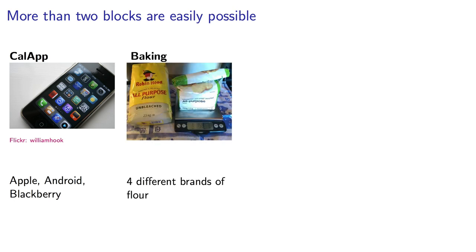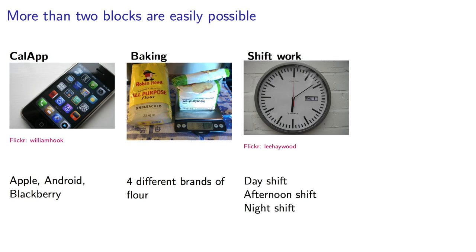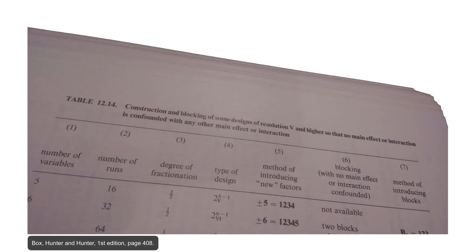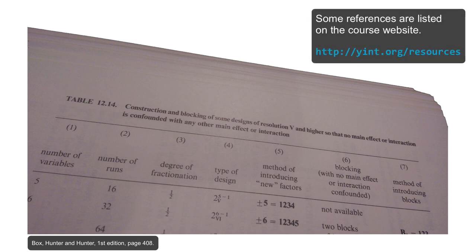In our baking example, if we were using large quantities of flour, we might have had four different flour suppliers. Experiments in a factory might rely on three shifts, a morning, afternoon, and evening shift. There are cases where there's blocking with more than two groups. And what happens is we simply create extra blocking factors in the design. There are tables in many of the statistics textbooks that show how to generate these blocks in an optimal way.